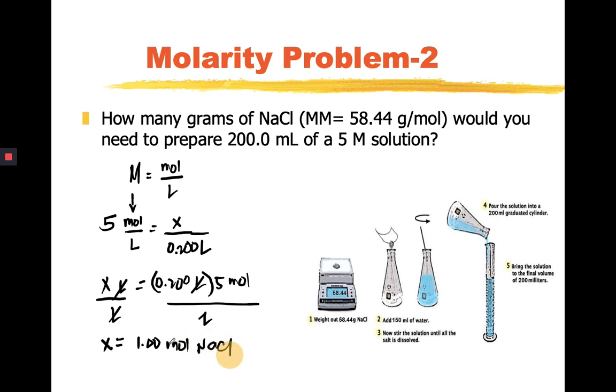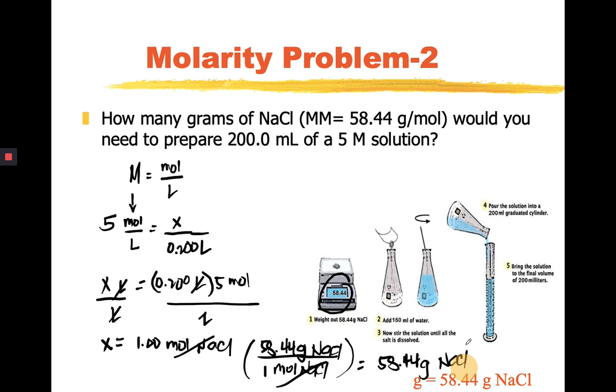Now, we do not want this. What we do want is the number of grams. So, we have to convert this into grams. This is 58.44 grams is to 1 mole. So, right now, we are converting number of moles into grams. That means we need 58.44 grams to make this particular concentration of solution at that specific volume. This is NaCl.